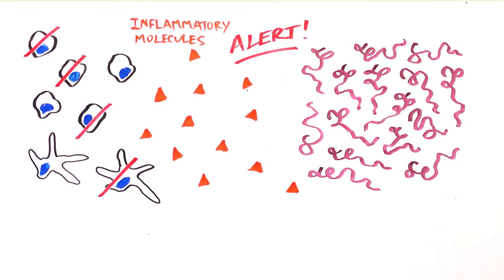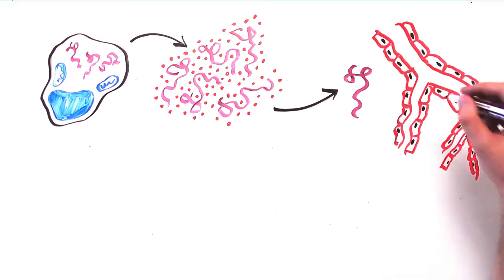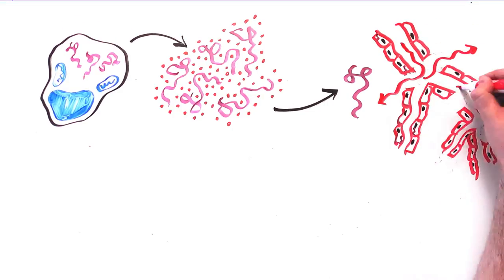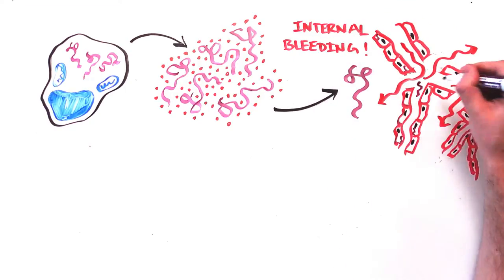But the virus has already done lots of damage to the immune system, and the inflammatory molecules damage tissues and cause fevers. Next, the virus infects cells that line blood vessels. As the cells die, blood vessels become compromised and blood leaks out, causing internal bleeding.